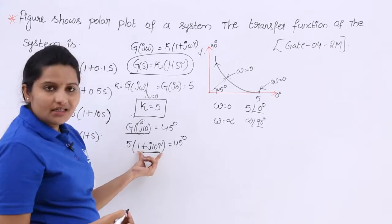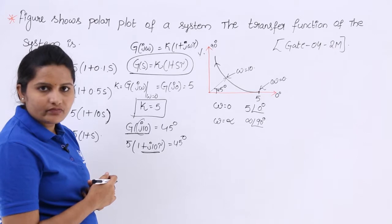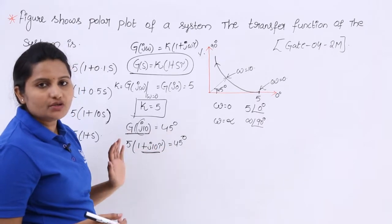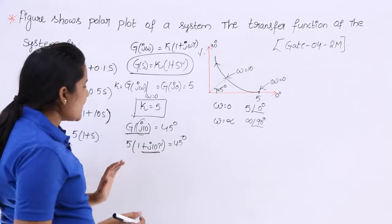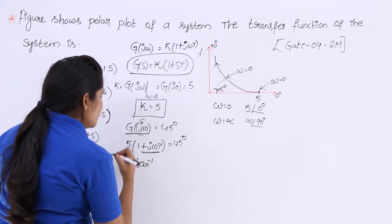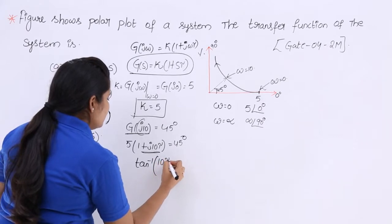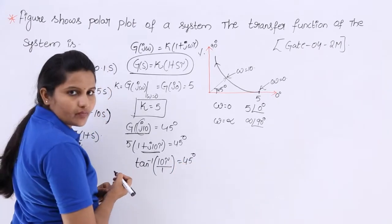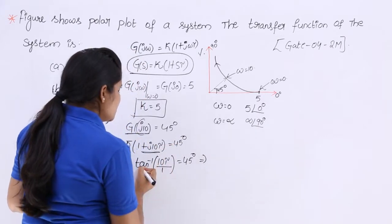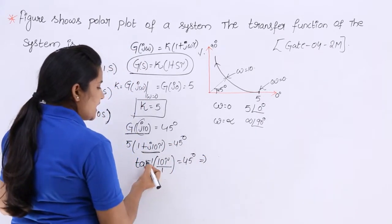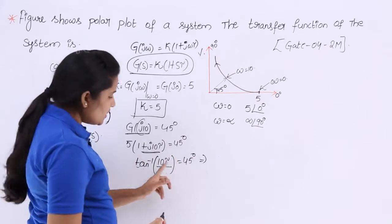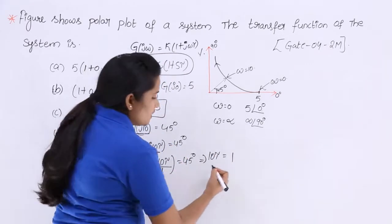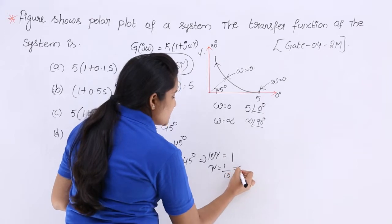To find the angle of 5×(1 + j·10·τ), we use tan⁻¹(b/a), which gives tan⁻¹(10τ / 1) = 45 degrees. Taking tan of both sides: 10τ = tan(45°) = 1, so τ = 1/10 = 0.1.